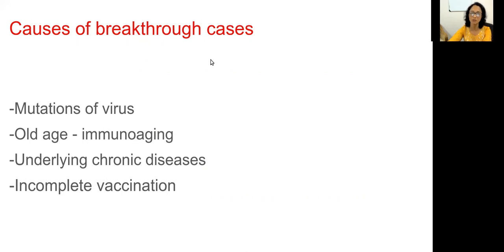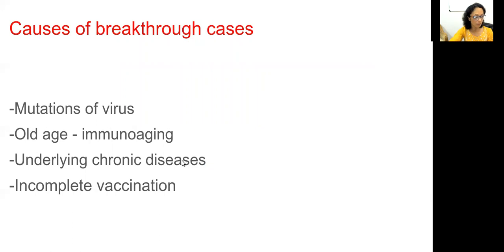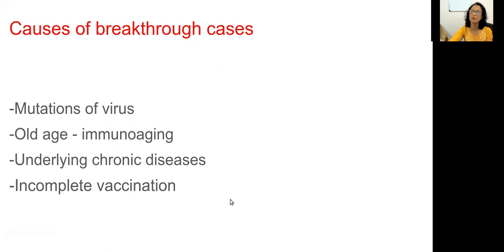What are the causes of breakthrough cases — those who develop infection even after vaccination? First is mutations: the structure and function of the virus changed so the body doesn't know how to defend, causing infection. Second is old age: immunity is compromised and weak. Third is underlying chronic diseases, which also produce a compromised immune response. Fourth is incomplete vaccination: for any vaccine to work, at least two weeks must pass. If a person is exposed to COVID infection before two weeks after vaccination, it may produce infection. These are the causes of breakthrough cases.